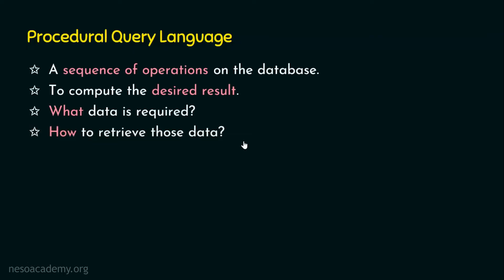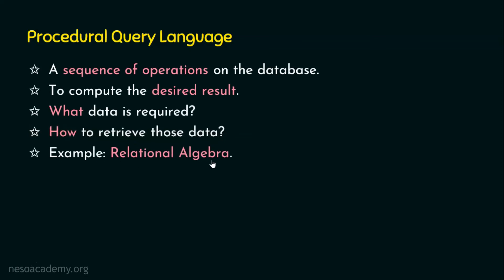Now you can correlate this with the analogy. We saw two people, X and Y. To X, we instructed only what is required. To Y, we instructed what is required and how to get it. In other words, to X we just said 'prepare coffee'; to Y we said we need coffee and also instructed how to prepare it. This procedural query language is like Y in the analogy — we say what is required and also instruct how to retrieve the data. The example for procedural query language is relational algebra, which we are going to focus on in this chapter.